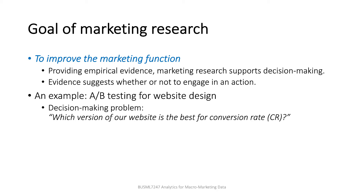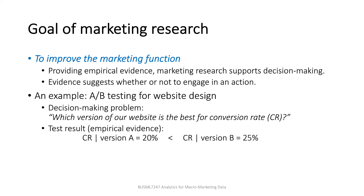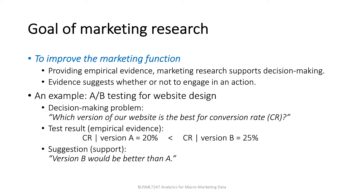To do so, the manager ran a simple experiment online. She built a website with each of the versions and made some of the store visitors enter the new site instead of the old one. Those sample visitors were randomly assigned to one of the versions, and the manager tracked conversions to purchase in each version for several weeks. She found that the conversion rate in version A is about 20%, whereas the rate in version B is about 25%. With this empirical evidence, the manager concluded version B would be better than A, and decided version B as the store's new website.